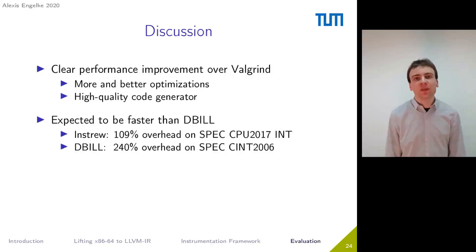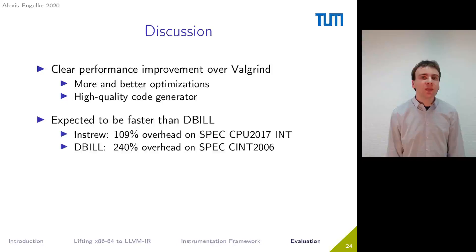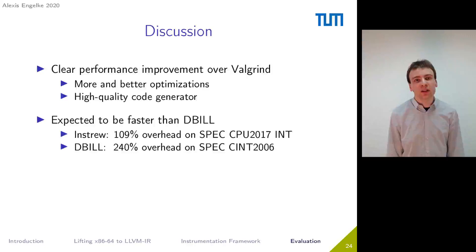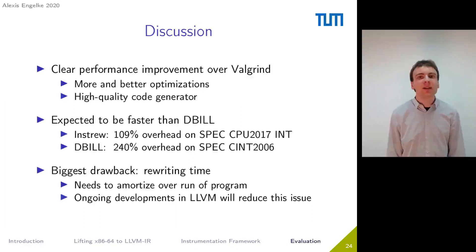We also expect significant performance improvement in comparison to DBIL. INSTRU has an overhead of 109% on the integer subset of the SPEC CPU 2017 benchmarks, while DBIL is reported to have an overhead of 240% on an older version of the same benchmarks. However, the results also show the biggest drawback of our approach, which is the rewriting time, and this rewriting time needs to amortize over the run of the program. Ongoing developments in the LLVM community to reduce compile time are expected to significantly reduce rewriting time in the future.